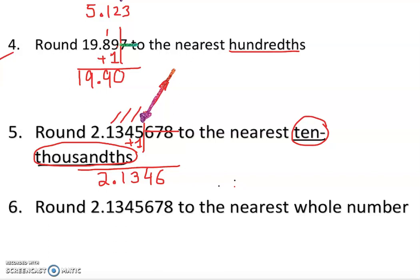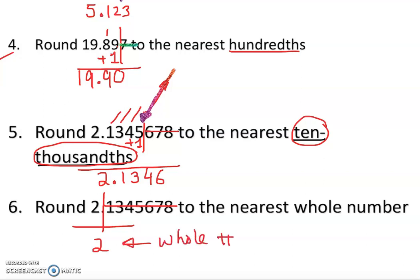The last one: round to the nearest whole number. I draw a vertical line after the ones digit. The digit after the line is one, which is less than five, so I drop everything and bring down the two as it is. The answer is just 2 — a whole number. I hope you liked the video; if you have any questions, leave a comment. Thank you!